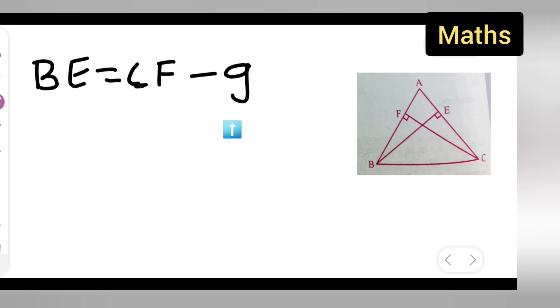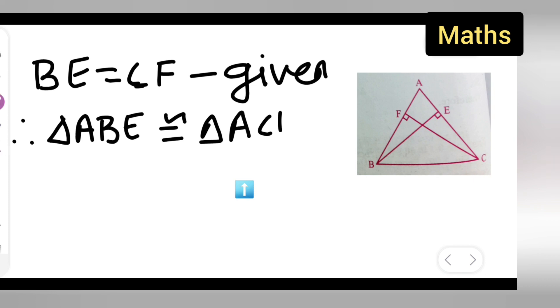Therefore, y'all can say that triangle ABE is congruent to triangle ACF. By which rule will it be?